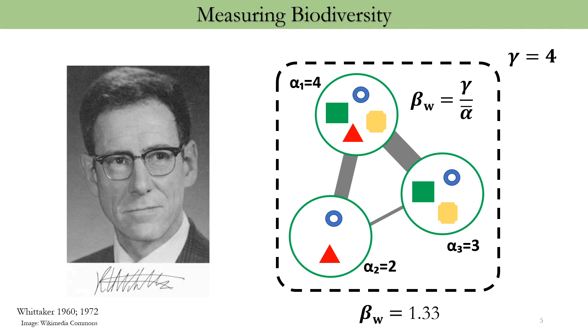Now, let us understand these definitions using this example on your screen at the right hand side. Consider this dashed box as a broad region and the green circles as sites. Alpha at each site is different. For example, at one site, alpha is 4, that is species richness is 4. In another site on the right hand side, alpha is 3. And the other one, alpha is 2. If we look at the shapes which refer to each species, we immediately know that gamma, that is the species richness of the entire broad region is 4.